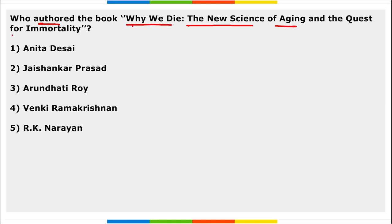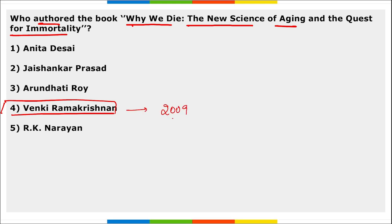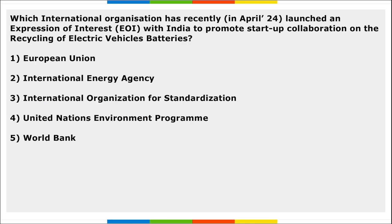Next: who authored the book 'Why We Die: The New Science of Aging and the Quest for Immortality'? This book was authored by Venki Ramakrishnan. In 2009, Venki Ramakrishnan was honored with the Nobel Prize in Chemistry.